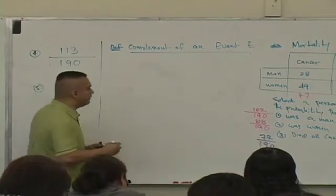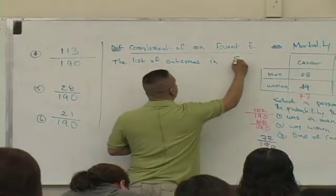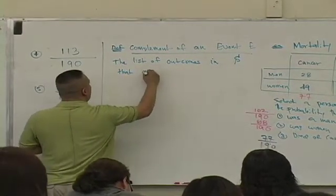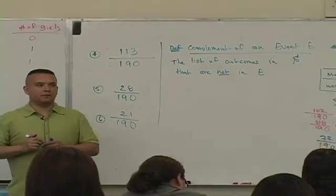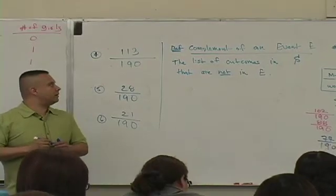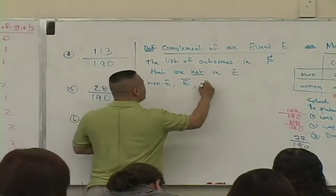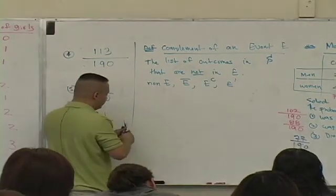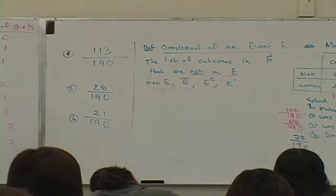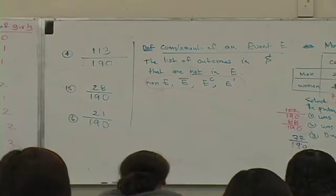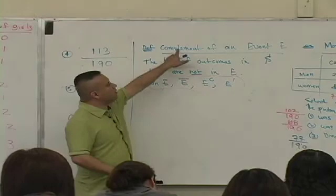That is, this is the definition of the complement of an event. It is the list of outcomes in the sample space that are not in the event. The notation, you can see, sometimes you put not E or non E, E with a line on top, E with a C for complement, E with a dash. This is called the complement of an event.